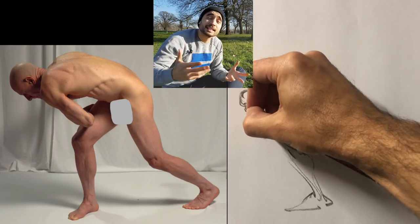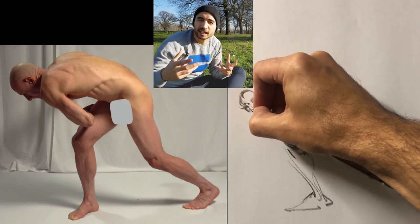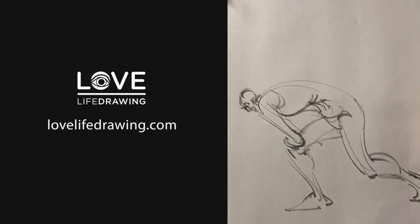And then the legs are elongated and the head shrunken. That's his stylistic choice. Hi, my name's Kenzo and this is Love Life Drawing.